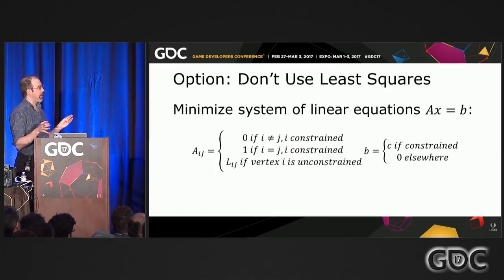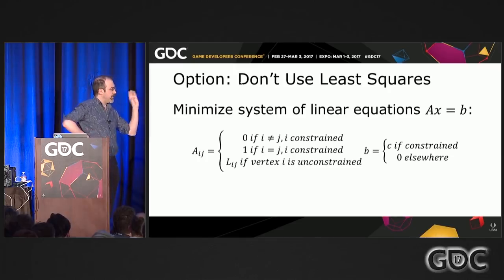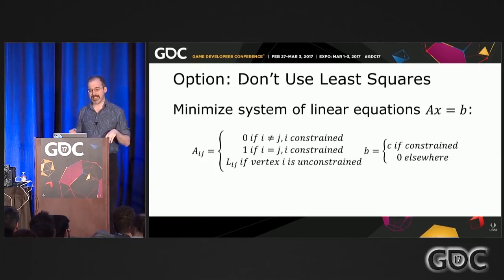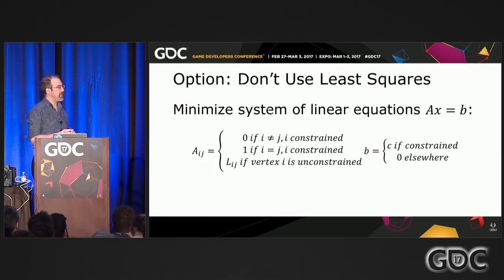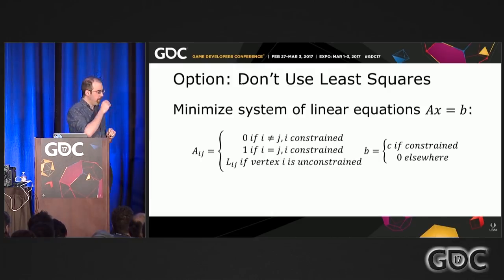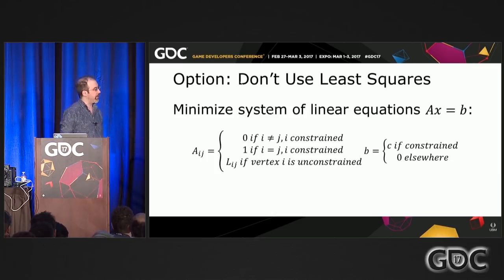System one: if you construct the entire system of linear equations for the Laplacian and boundary conditions, you can get something solvable without least squares. The problem is it's numerically unstable — if you run real linear algebra software on this matrix because its condition number is so awful, it will basically explode. Not recommended.